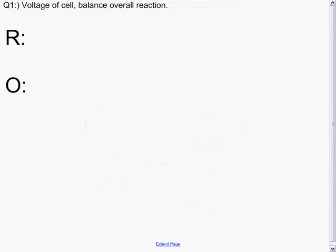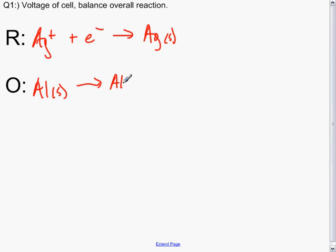So our reduction voltage of the cell, balance overall. Our reduction we said is our silver reaction. Started writing that off incorrectly. And our oxidation with aluminum, writing the reverse reaction from the table.